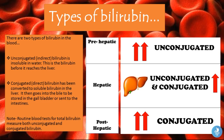Now let's talk about the types of bilirubin and how they relate to jaundice. There are two types of bilirubin in the blood: the unconjugated or indirect bilirubin, which is insoluble in water and exists before the liver, and the conjugated or direct bilirubin, which has been converted to a soluble form in the liver and goes into the bile to be stored in the gallbladder or sent to the intestines. Routine blood tests measure both unconjugated and conjugated bilirubin as well as total bilirubin.